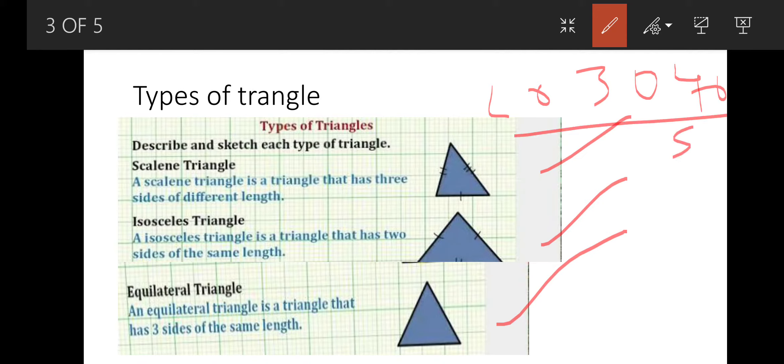Isosceles. Isosceles triangle is a triangle that has two sides of the same length, like 20, 30, 20. So it is isosceles.